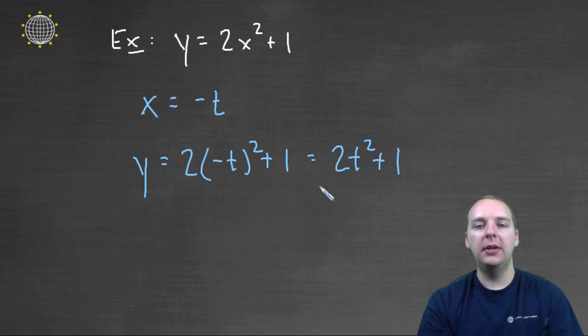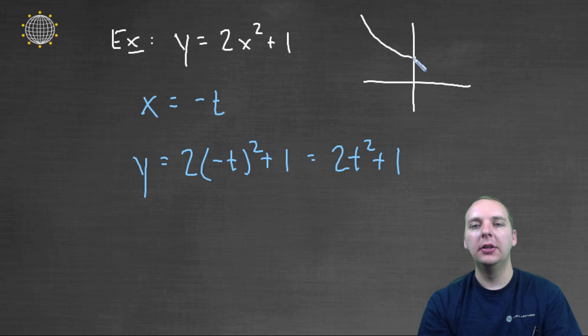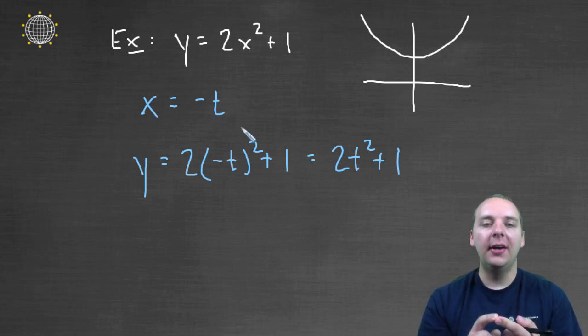But the last one's a little bit of a different animal. You would still have the same basic shape to the curve. But notice now, as the t gets bigger, the x gets smaller, right?